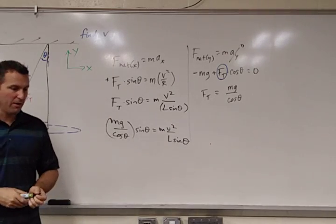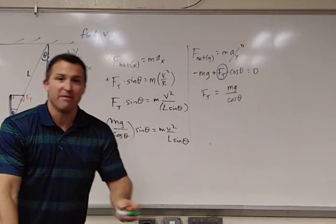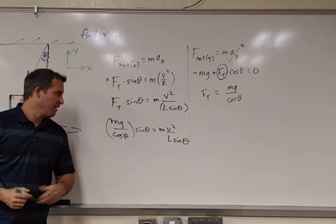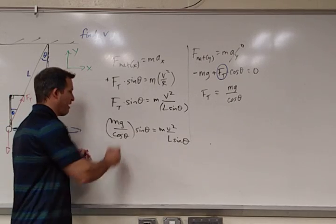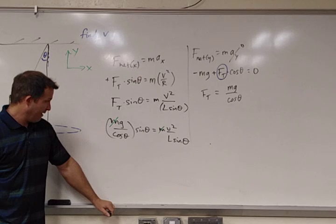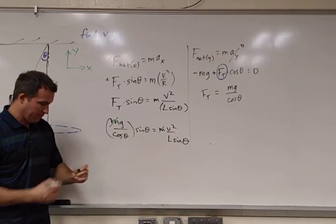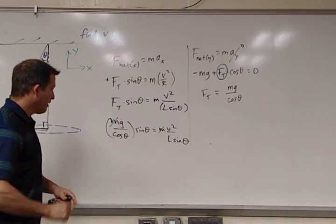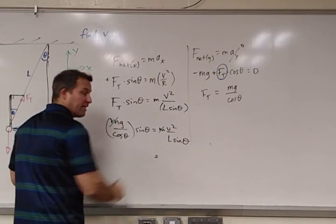And we've seen this in a number of problems at this point that, well, it's not always, the math doesn't always cancel out, but in a lot of problems it does. We can divide both sides by m. And at this point, we can solve for v, and let's see here. I'm going to, well, I'm going to get, well, I'll skip a couple steps, but you can work through these steps.